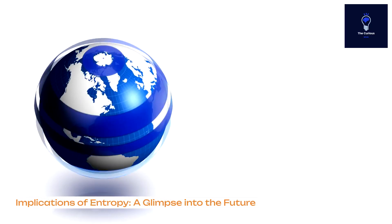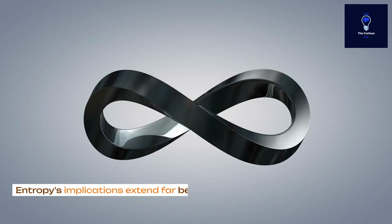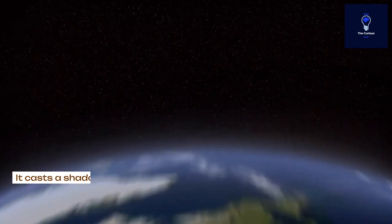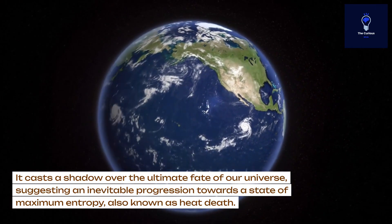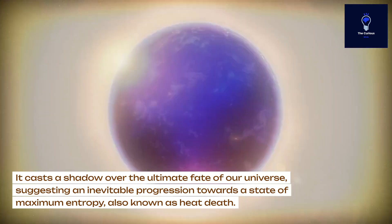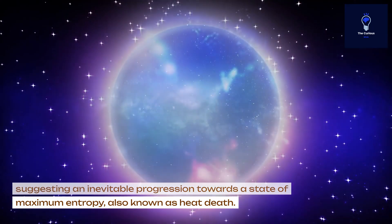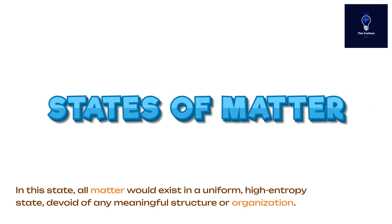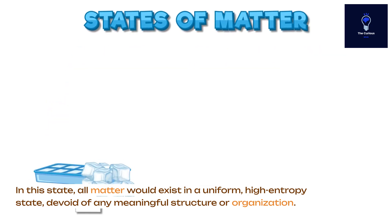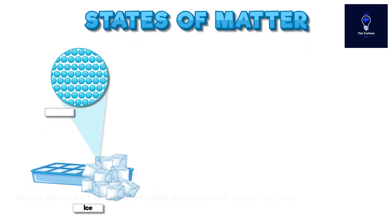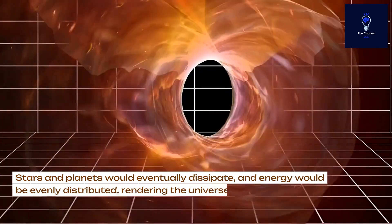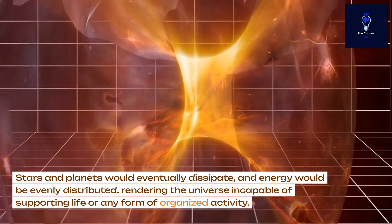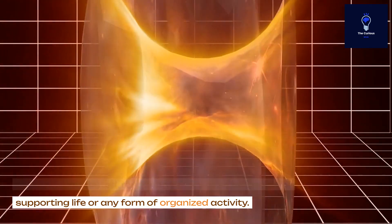Implications of entropy — a glimpse into the future. Entropy's implications extend far beyond the realm of simple examples. It casts a shadow over the ultimate fate of our universe, suggesting an inevitable progression towards a state of maximum entropy, also known as heat death. In this state, all matter would exist in a uniform high-entropy state, devoid of any meaningful structure or organization. Stars and planets would eventually dissipate, and energy would be evenly distributed, rendering the universe incapable of supporting life or any form of organized activity.